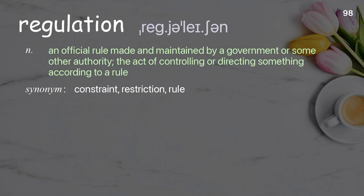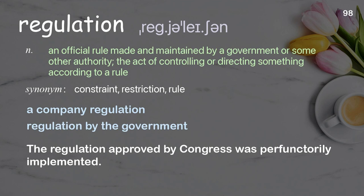Regulation: an official rule made and maintained by a government or some other authority; the act of controlling or directing something according to a rule. Examples: a company regulation, regulation by the government. The regulation approved by Congress was perfunctorily implemented.